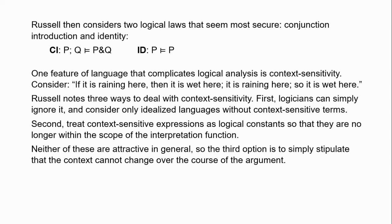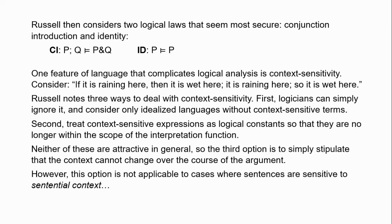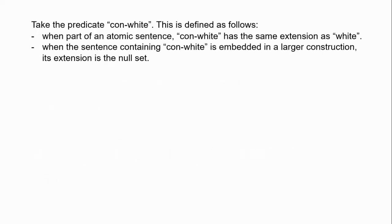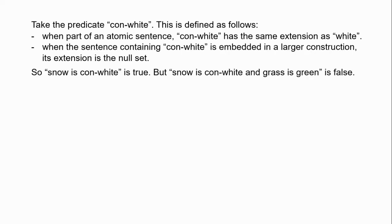The final option is simply to stipulate that context cannot change over the course of an argument — that's sort of the standard move. The reason why the 'here' argument isn't a legitimate instance of modus ponens is because the relevant context changes from the premises to the conclusion, and that's just something we rule out. The problem with this as a general solution is that there seem to be context-sensitive expressions that are sensitive to the sentential context. Consider the predicate 'con-white': when con-white appears in an atomic sentence, it has the same extension as white, so 'snow is con-white' is true.